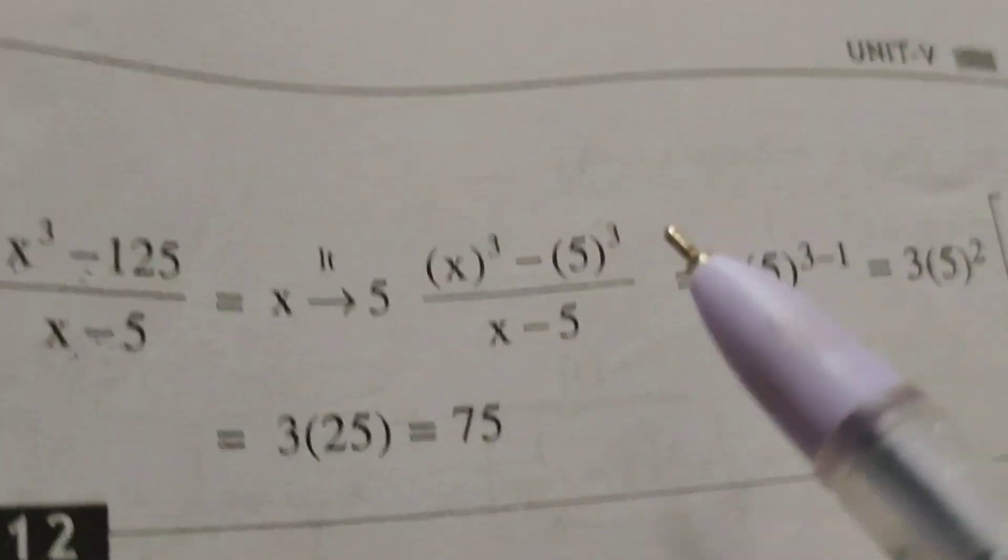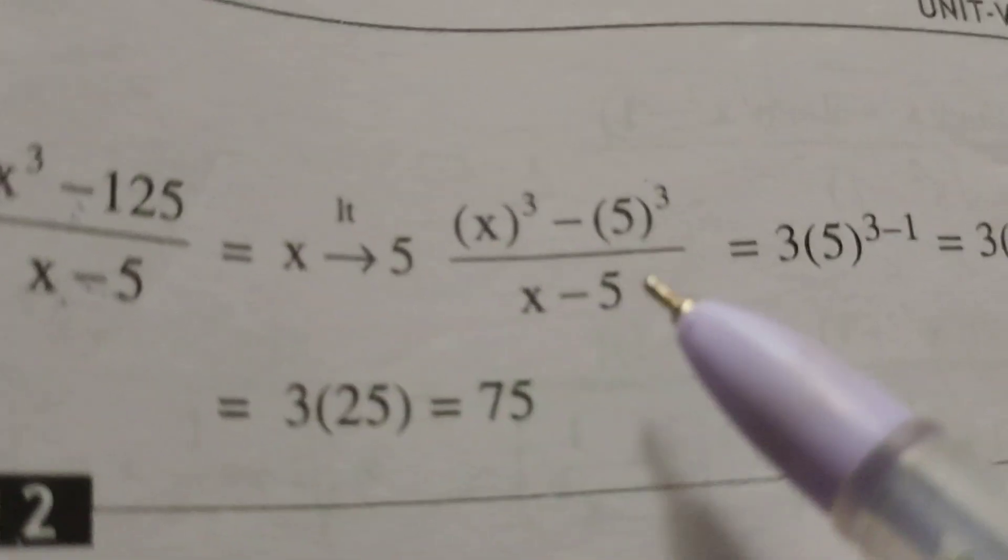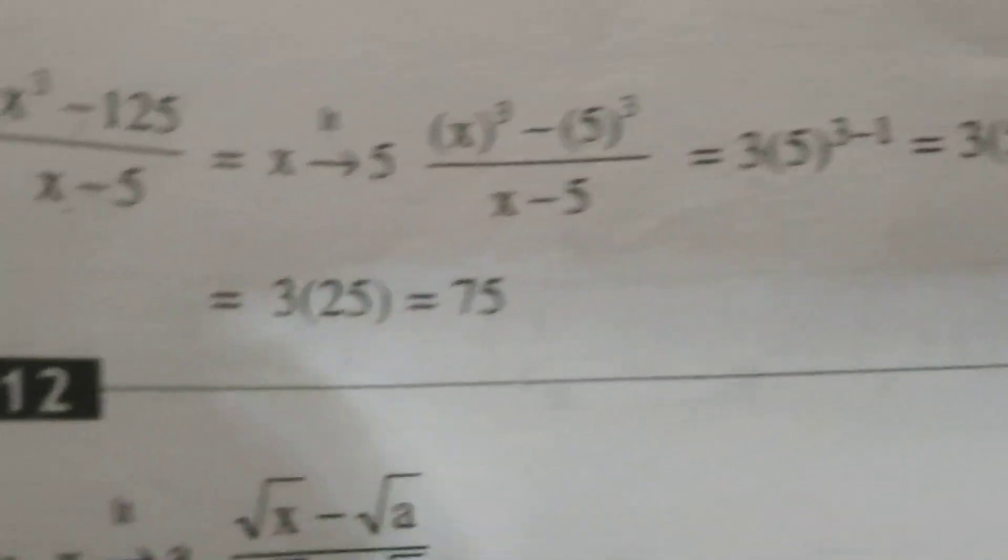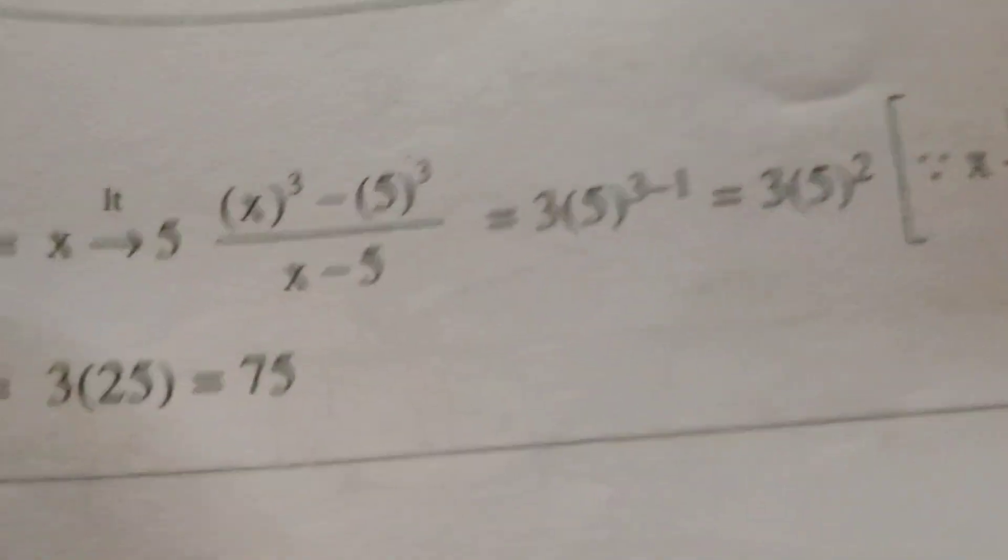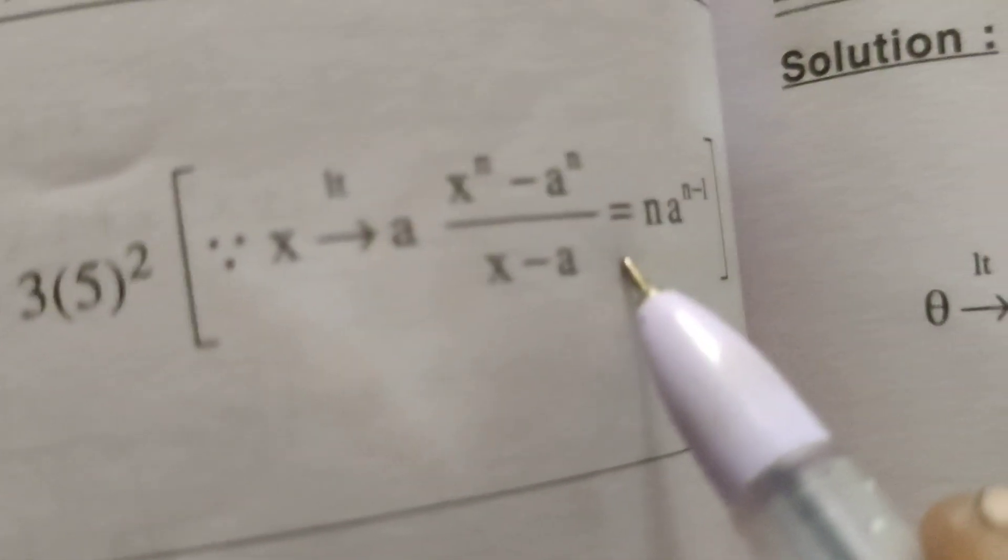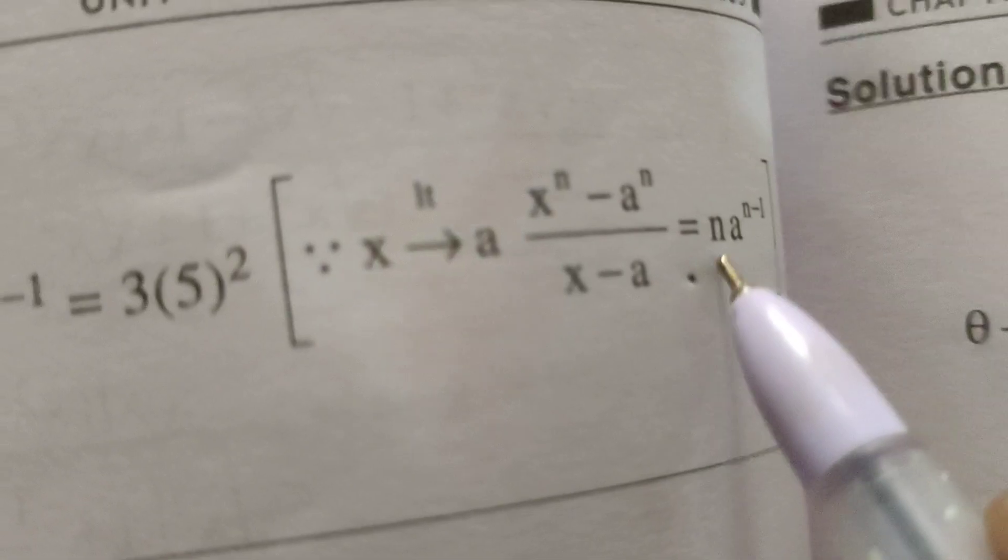Limit x tends to 5, write x cube minus, this 125 can be written as 5 cube. Next, applying the formulae, standard formulae by the limits: limit x tends to a, x power n minus a power n by x minus a, that is n into a power n minus 1.